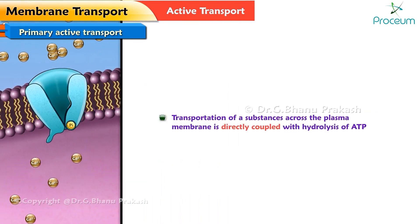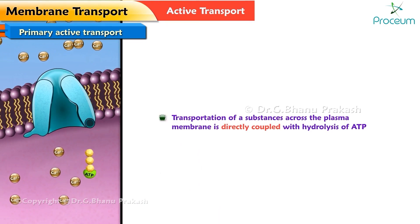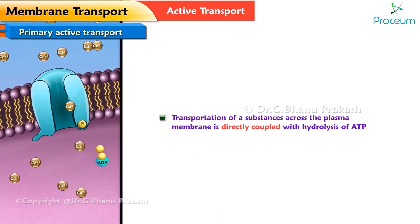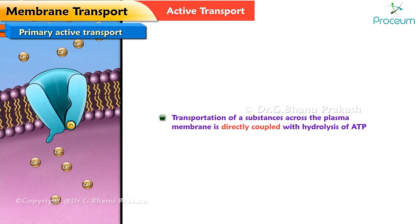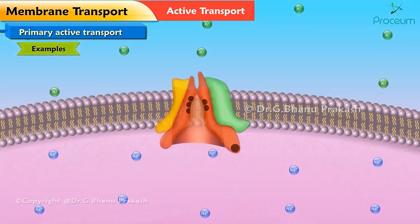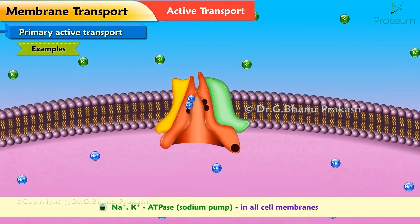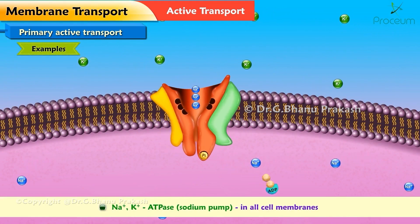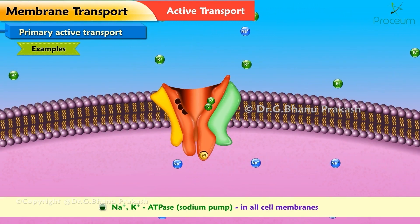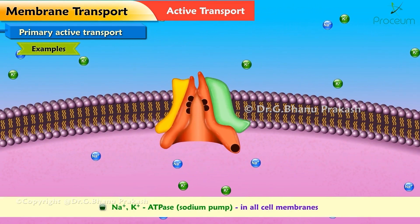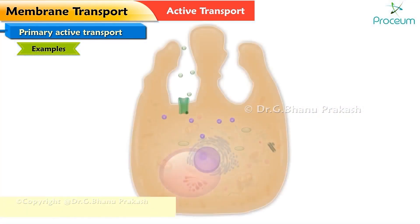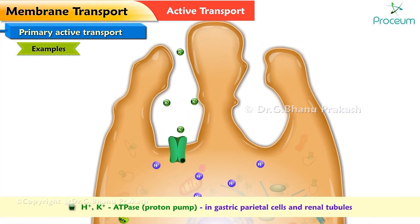The first one we will discuss is primary active transport. In primary active transport, the transportation of a substance across the plasma membrane is directly coupled with hydrolysis of ATP. For example, you could have Na+ or K+ ATPase, or a sodium pump, which is present in all cell membranes.